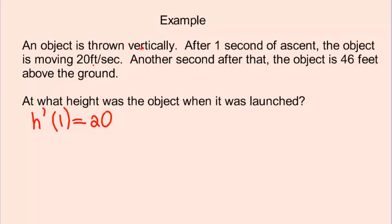Another second after that, so now we are at two seconds, because we have one second here. Add one more to that, you get two. The object is 46 feet above the ground. This is a clue not about velocity, but about height. The labels are there to help you. 46 feet is clearly a height measurement. So, they're saying the height two seconds after launch is equal to 46 feet.